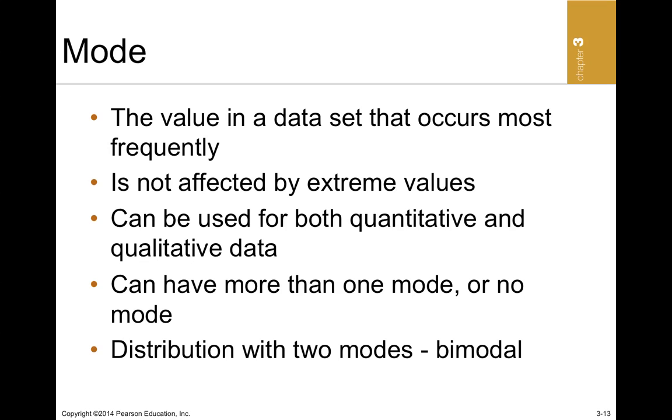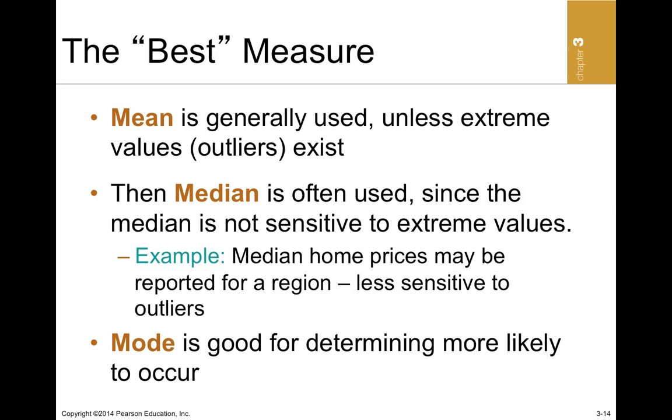So, I've already described a number of these measures. The mode, as I said, is the value that occurs most frequently in the data, and it's not affected by extreme values at all. The mean, generally, is one of the best measures and most popular ones. The median is used often, particularly when you have skewed distributions. When you have skewed distributions, the mean tends to be affected by the extreme values, but the median tends to be less so.